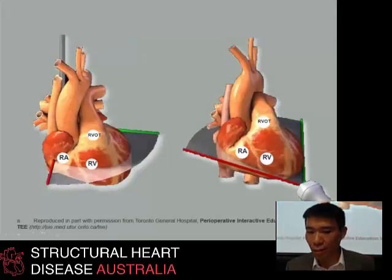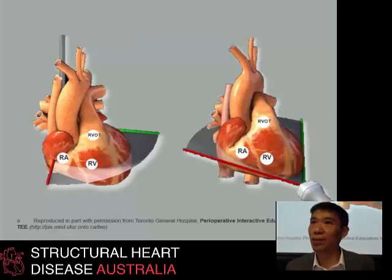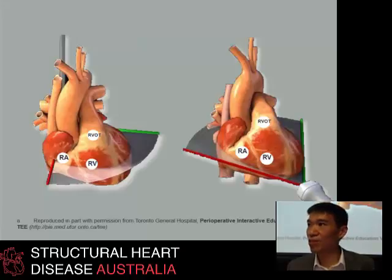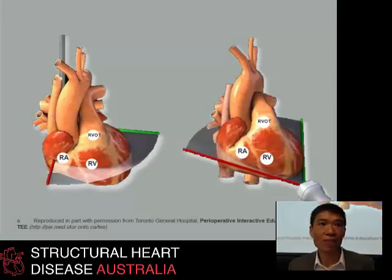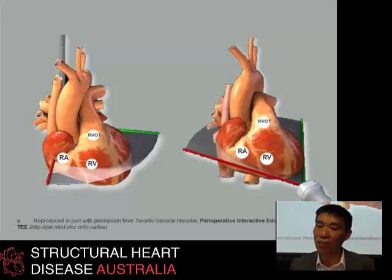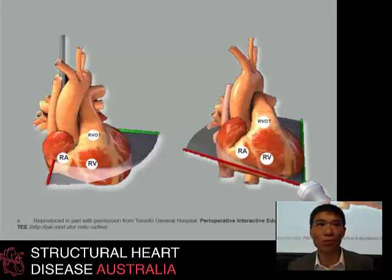The particular parameters that have been validated have all been done on transthoracic echocardiograms in normal subjects. Trying to apply them via transesophageal echocardiography in the operating room does pose some questions about how valid these measures are between different modalities. If you look at the scanning planes between TOE and transthoracic, it's clear that it's not quite 100% the same, even though most of us would assume that a four-chamber view is a four-chamber view.